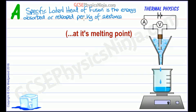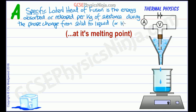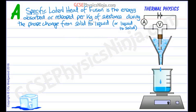So specific latent heat of fusion is the energy absorbed or released per kilogram of substance during the phase change from solid to liquid or liquid to solid. So we're talking about melting. If we're going from solid to liquid, we need to break bonds. To do that we need to put energy in. So the specific latent heat of fusion is telling us how much energy you need per kilogram of the substance to break those solid bonds and turn it into a liquid.